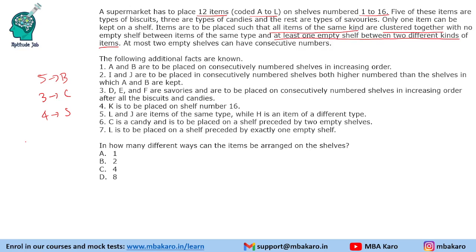So let us say we are putting the biscuits first. All biscuits B1, B2, B3 will be together and then there will be a minimum 1 gap — it can be more than 1 also. Then let us say we have the candies and so on. This is how we need to place these items.